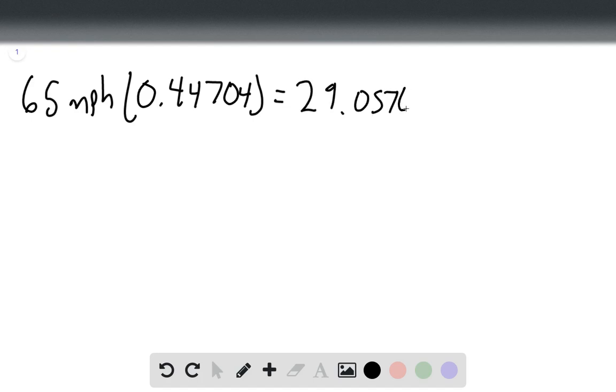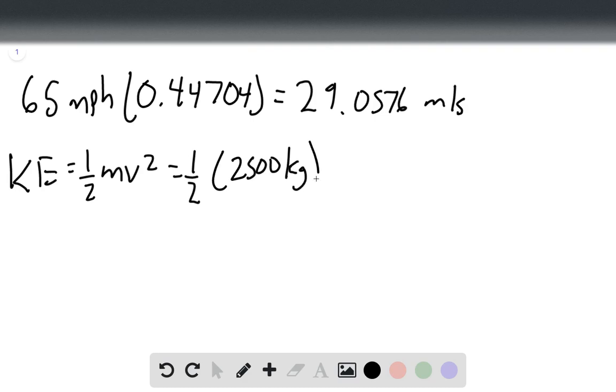And so we have 29.0576 meters per second. Now we can find kinetic energy with the KE equals one-half mass times velocity squared equation. So our mass is 2500 kilograms and our velocity we just found, we square that and that...